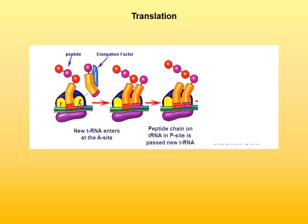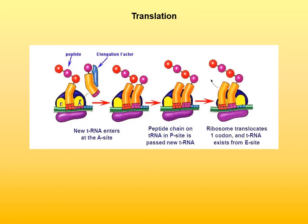The new peptidyl transfer RNA then moves to the P site, and the deacylated transfer RNA moves to the E site. The anticodon of the transfer RNA in the E site is not paired with a messenger RNA codon as it is about to exit the ribosome. Translation terminates when a release factor recognizes a messenger RNA stop codon in the A site. With a stop codon in the A position, the ribosome cannot bind an aminoacyl transfer RNA but instead binds a release factor. In eukaryotes, the single protein eRF1 recognizes all three stop codons, and additional factors then prepare the ribosome for another round of translation.